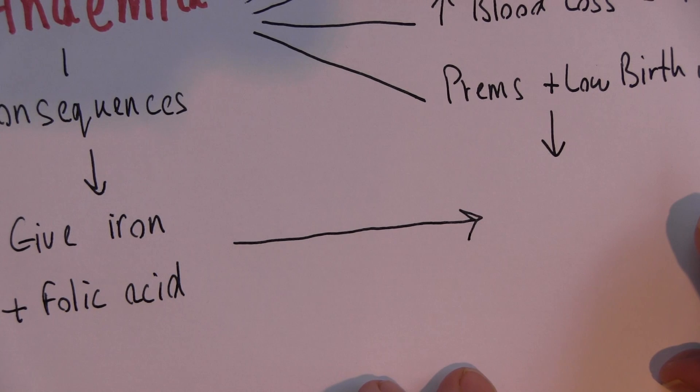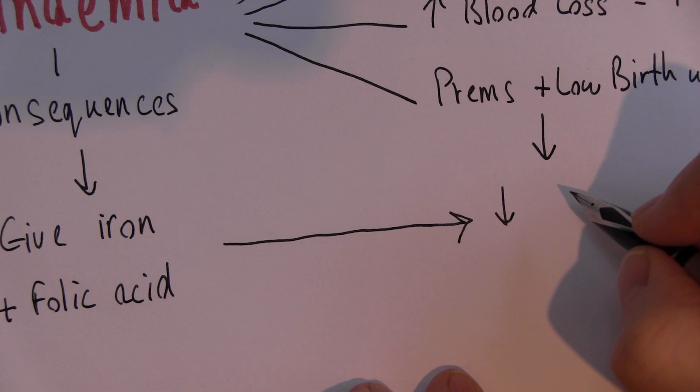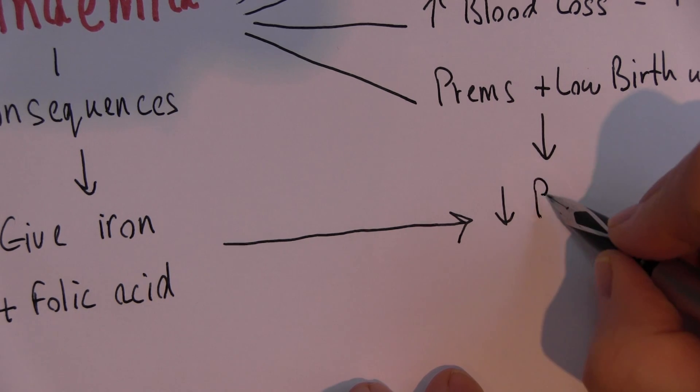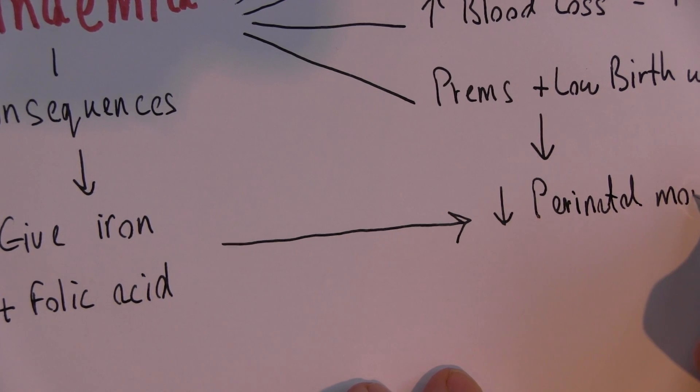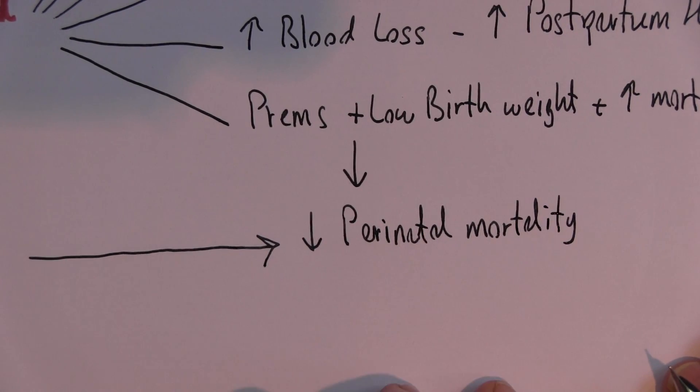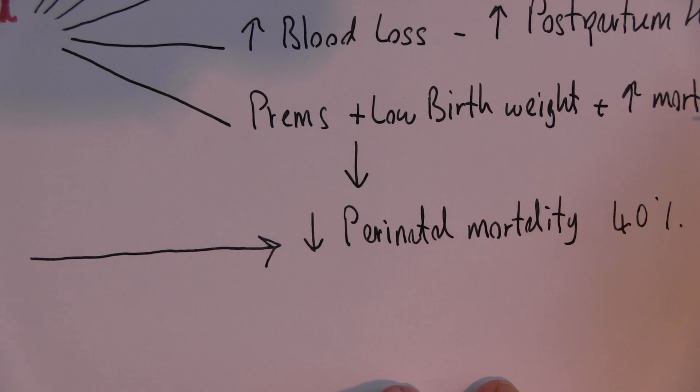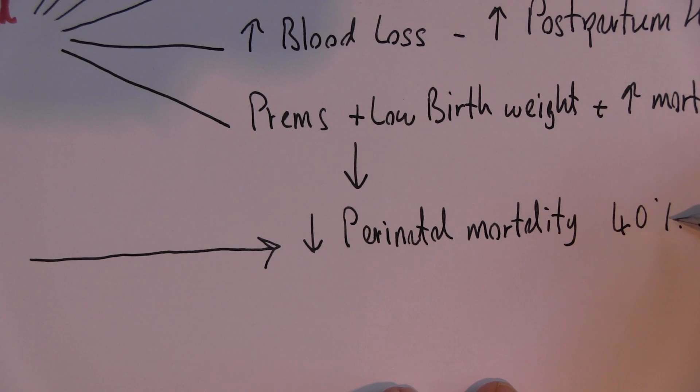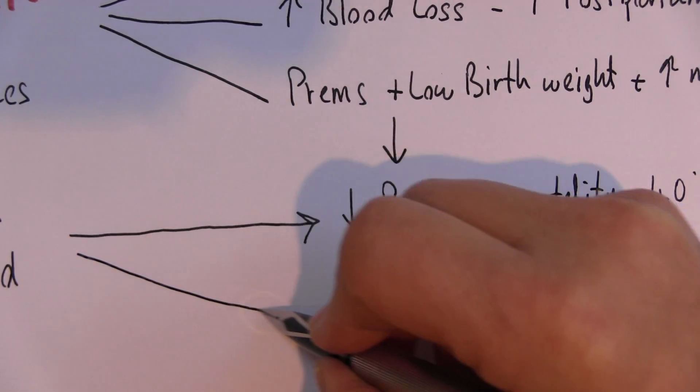Studies have shown that treating anemia effectively is going to reduce perinatal mortality. And the figure there is 40% in the first day of life. So we can have 40% more of the babies surviving during the first day of life.